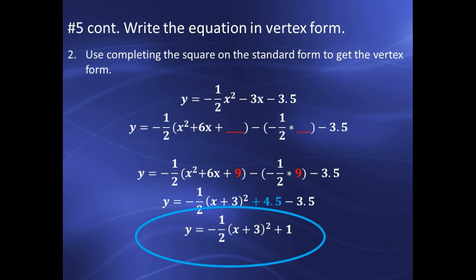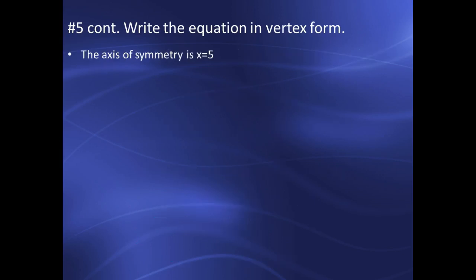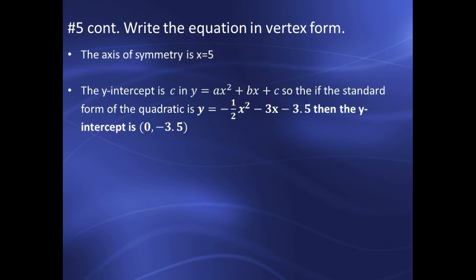There were some other questions associated with that last question, and here's what they were. The axis of symmetry is X is equal to 5. Once you have it in vertex form, then you know what? It's X is equal to 3. I'm sorry, this is a typo. Please correct that. It is X is equal to 3. If I have my equation in standard form, which I do, then the C value is the Y-intercept. And so, my Y-intercept is 0 comma negative 3.5. The domain is negative infinity to positive infinity in interval notation, and the range is negative infinity to 1.